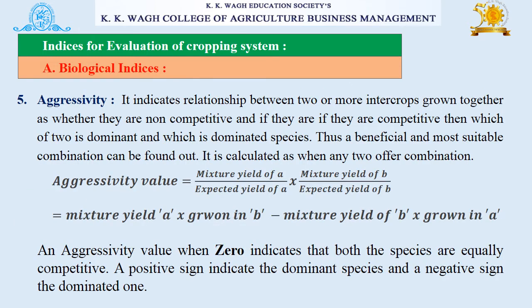Next is aggressivity. It indicates the relationship between two or more intercrops grown together — whether they are non-competitive, and if they are competitive, which of the two is the dominant and which is the dominated species, so that a beneficial and most suitable combination can be found out. Aggressivity value equals the mixture yield of A divided by expected yield of A, minus mixture yield of B divided by expected yield of B, adjusted for the proportions grown. An aggressivity value of 0 indicates both species are equally competitive. A positive sign indicates the dominant species and a negative sign indicates the dominated one.